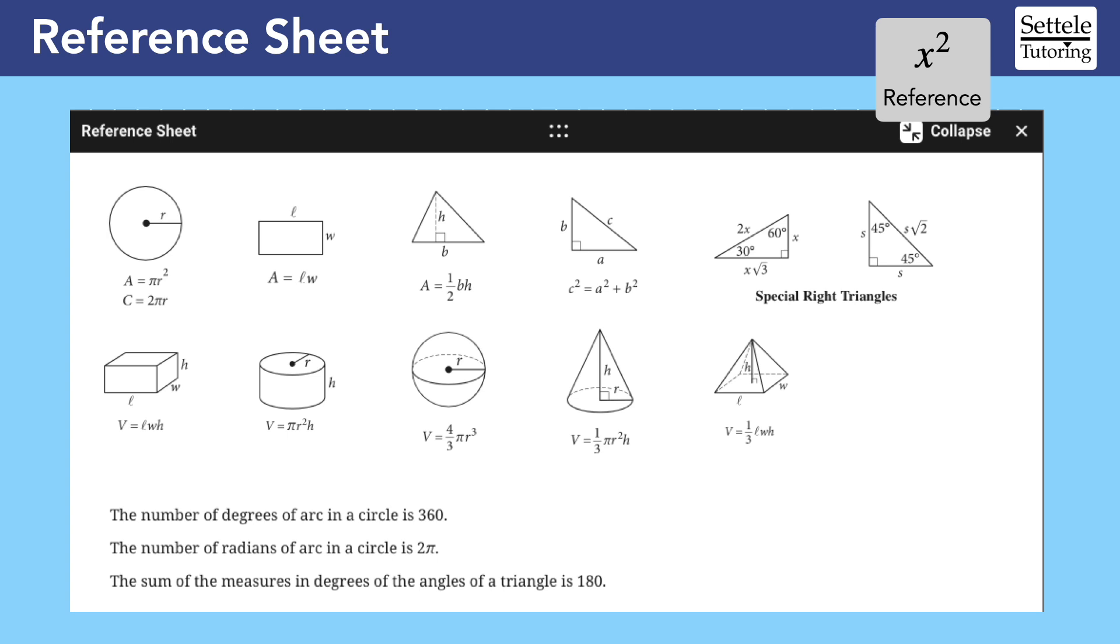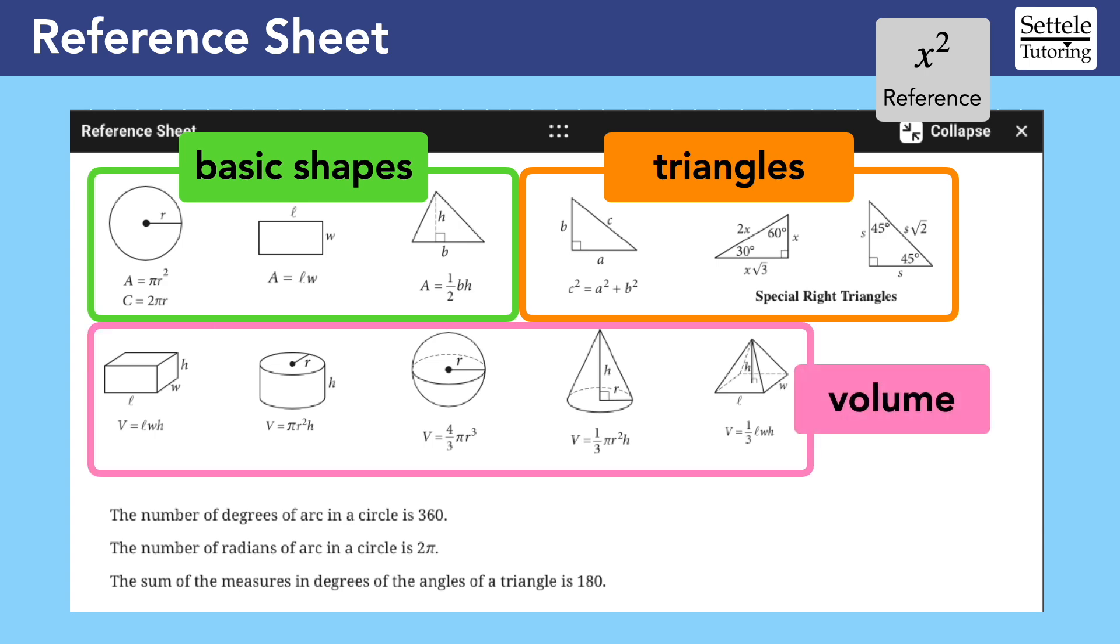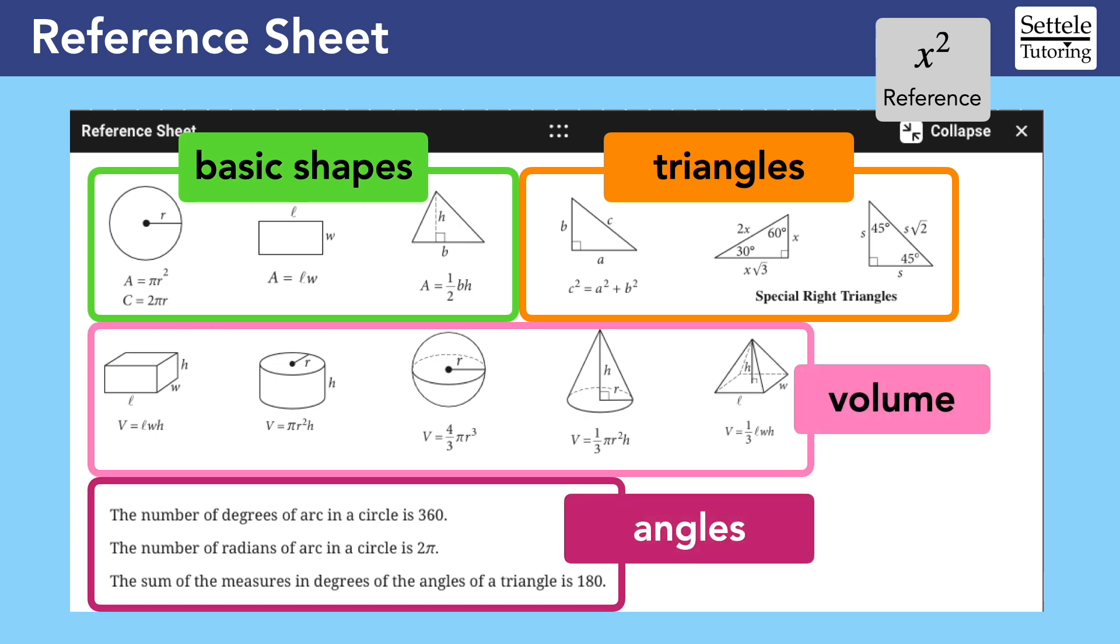I generally like to think of the reference sheet as consisting of four parts: basic shapes, triangles, volume, and angles. Let's take a closer look at each section.